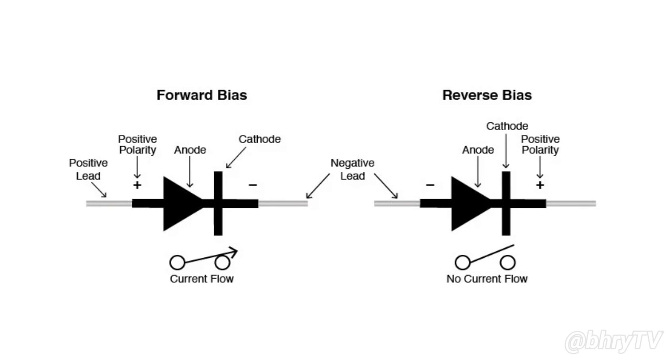When a diode allows current flow, it is forward biased. When a diode is reverse biased, it acts as an insulator and does not permit current to flow.